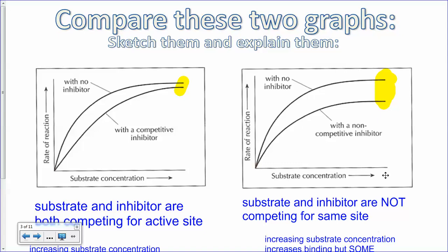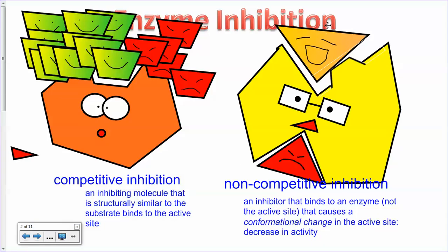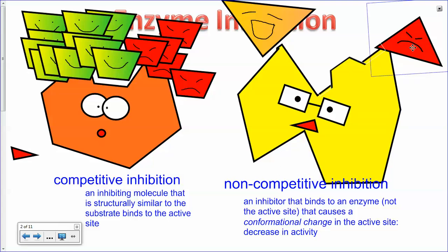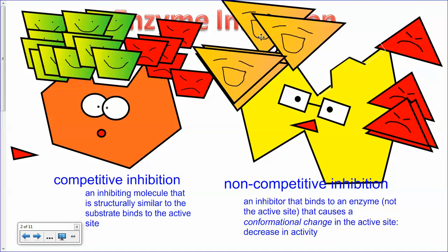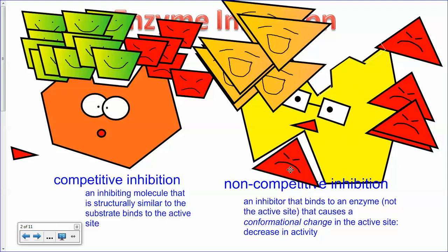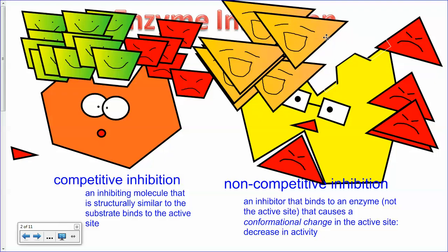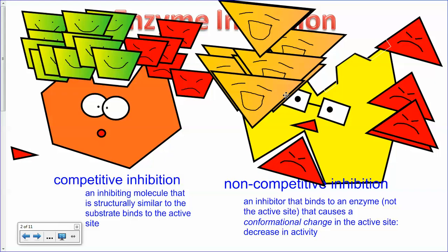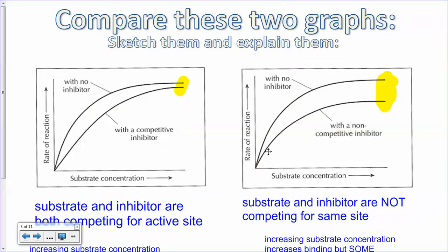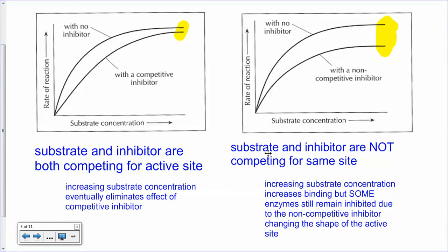For non-competitive inhibition, with no inhibitor everything is fine, but with the inhibitor it's lower as expected, and even at very high substrate concentrations you can't seem to overcome the effect as you could in competitive inhibition. If I increase the concentration of substrate it doesn't really matter, because as long as one of the inhibitors is bound at the other site, the substrates aren't going to be able to come in and fit. It doesn't matter how many substrates you produce — they're not competing for the same spot — so you can't overcome the effect of a non-competitive inhibitor. That's basically what these two graphs are showing.